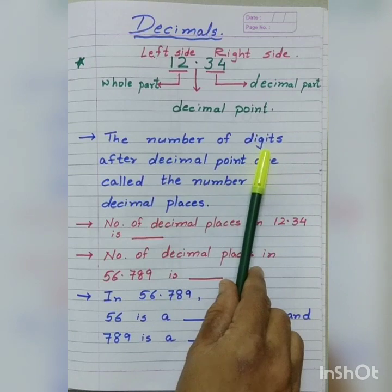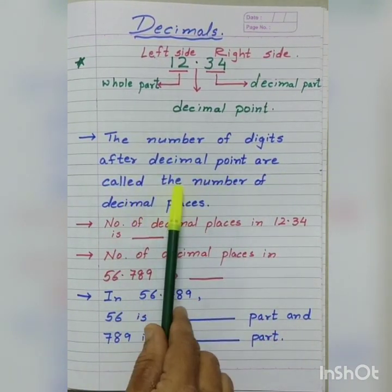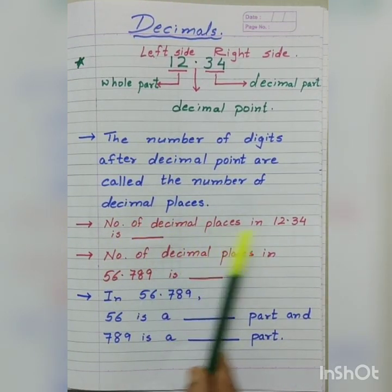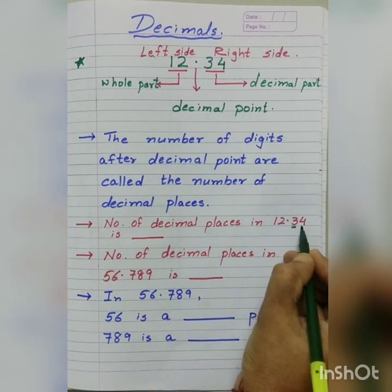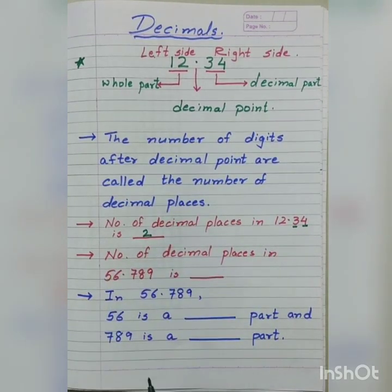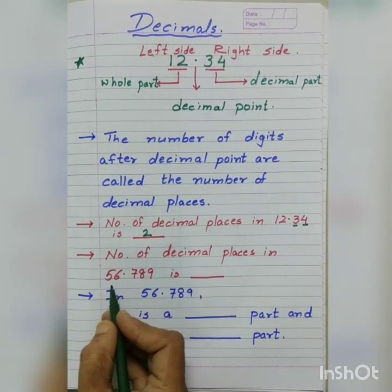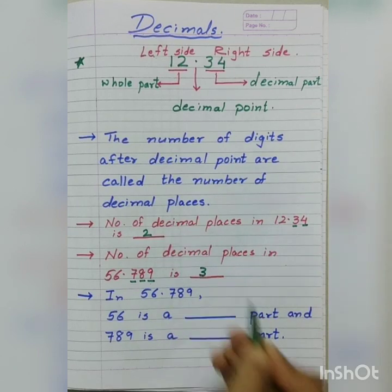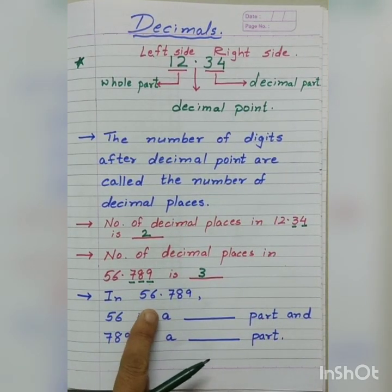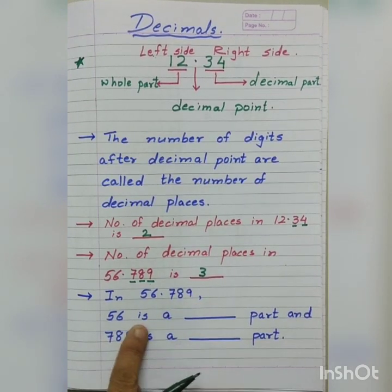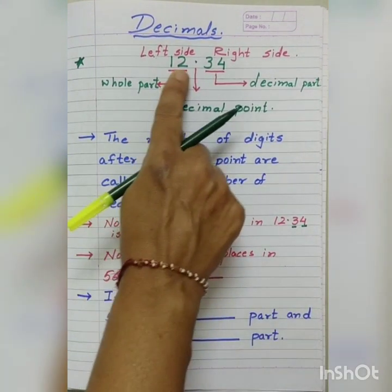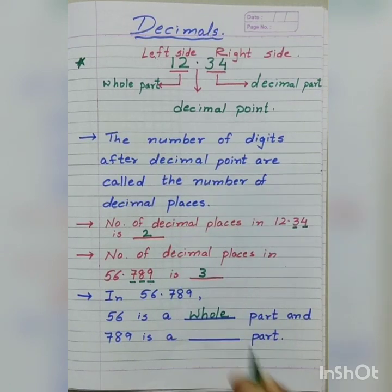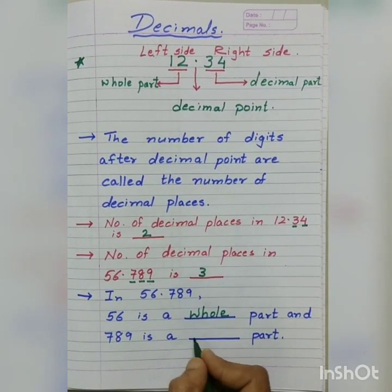The number to the right side of the decimal is called the decimal part. Thus, 34 is the decimal part. Here, the decimal point separates the whole part and the decimal part. The number of digits after decimal point are called the number of decimal places. Number of decimal places in 12.34 is 2. Number of decimal places in 56.789 is 3. In 56.789, 56 is the whole part, and 789 is the decimal part.